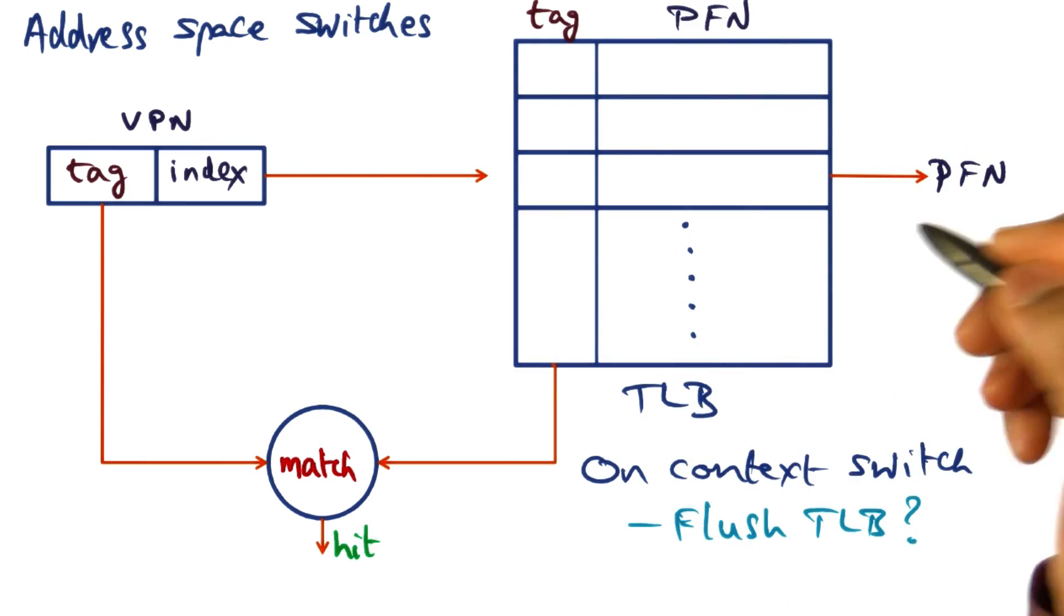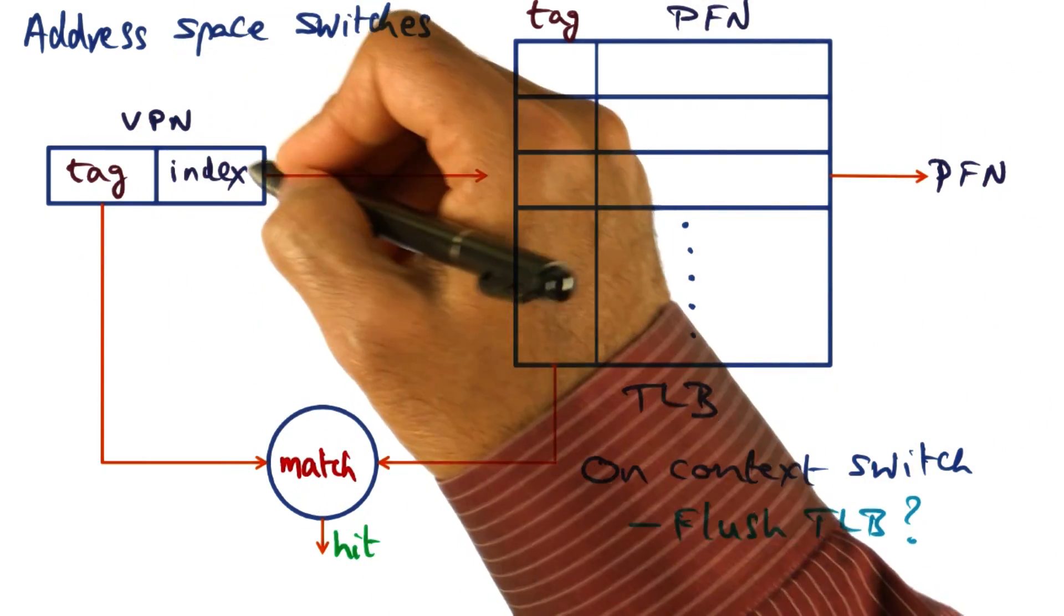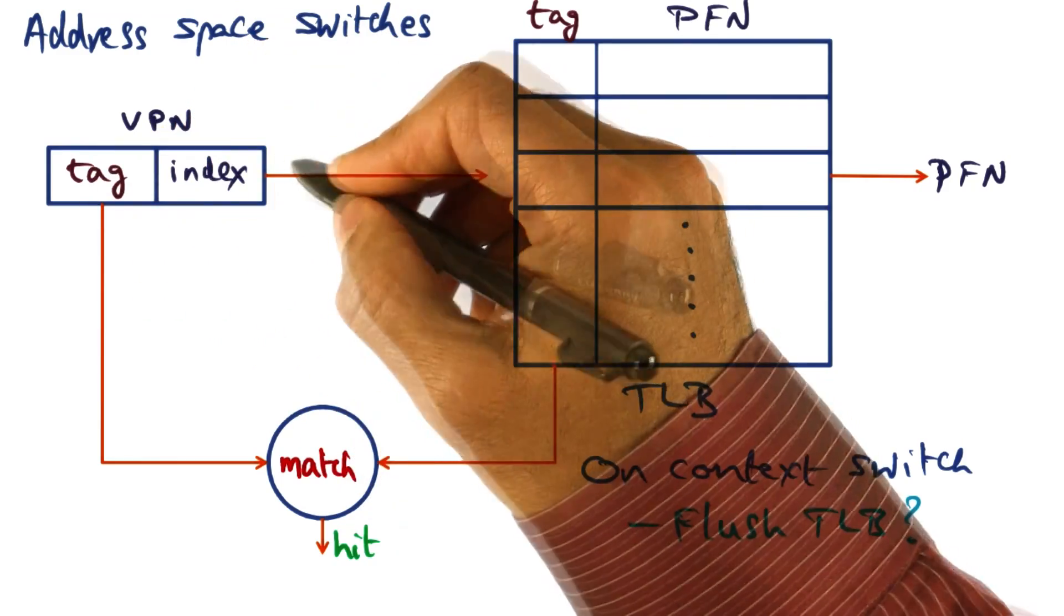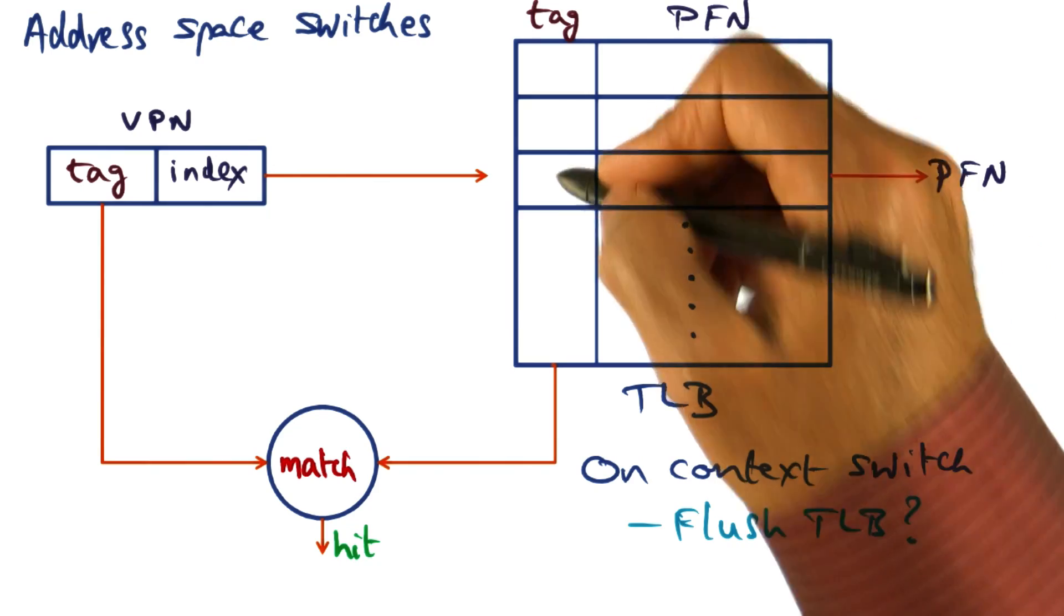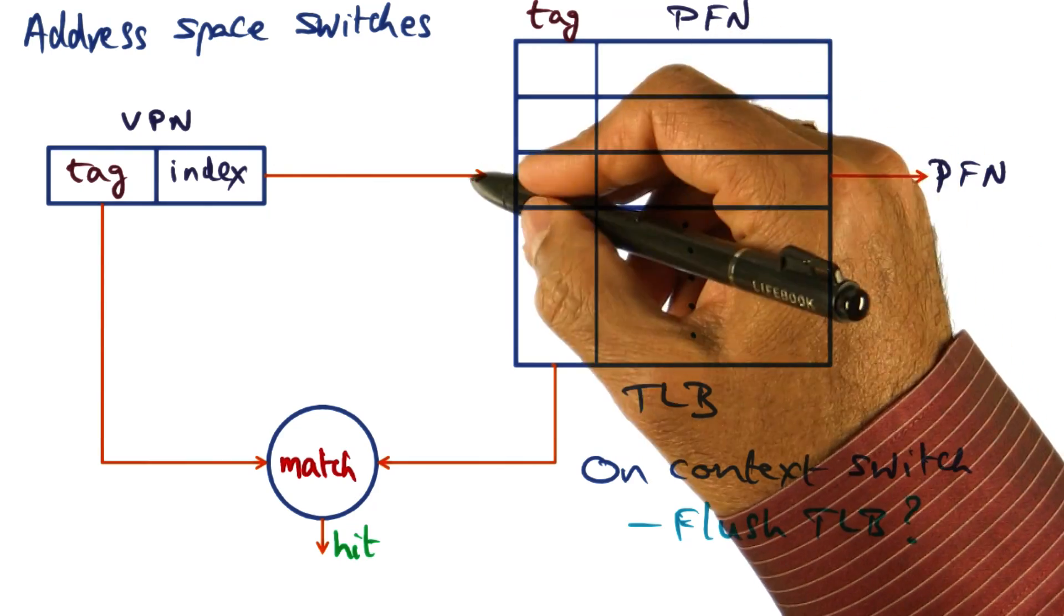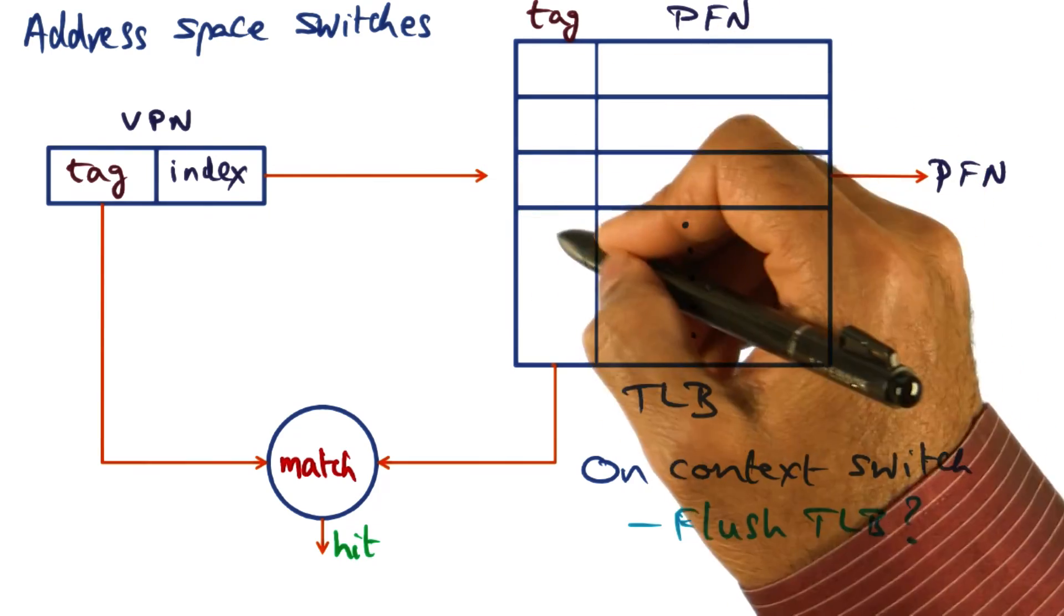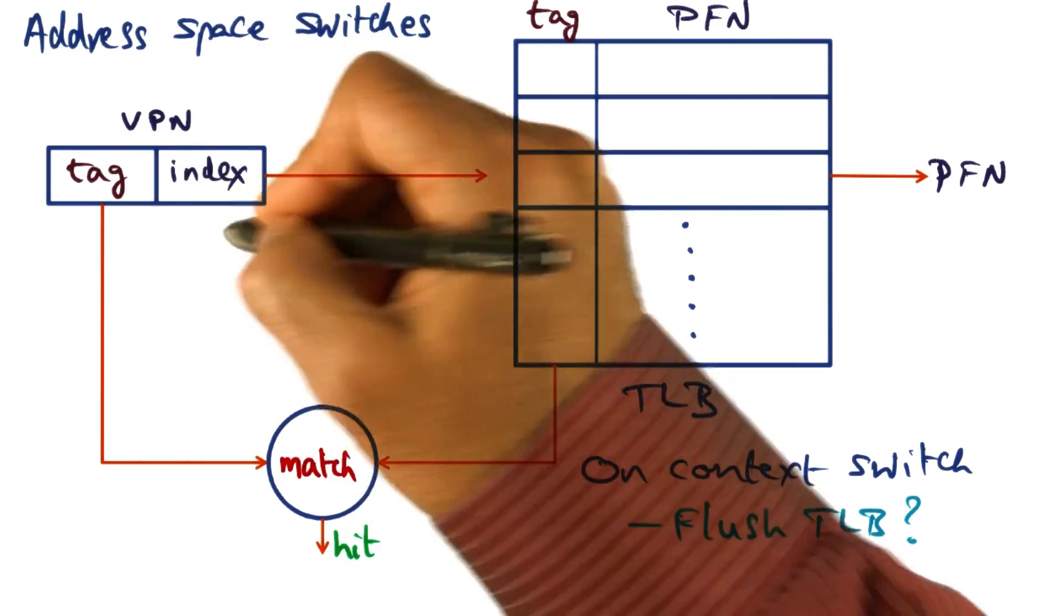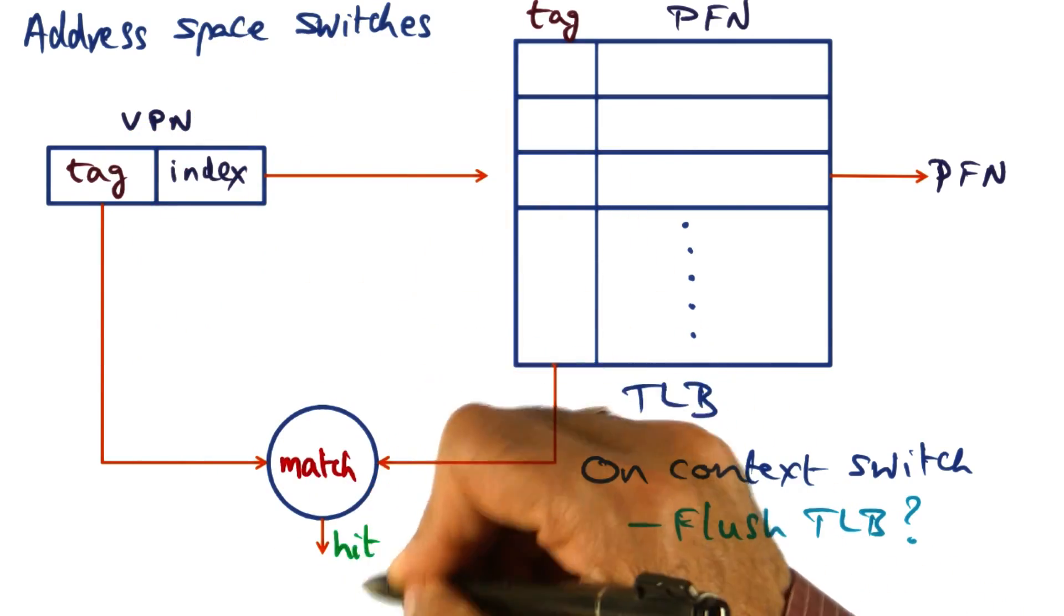You all know about the concept of a TLB. The virtual address consists of two parts, an index part and a tag. The index is used to look up the TLB and the tag that is contained in that particular entry of the TLB is matched against the tag coming from the virtual address. If they match, then we got a hit.